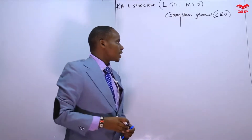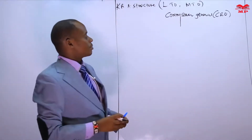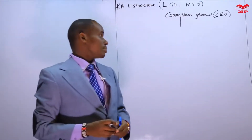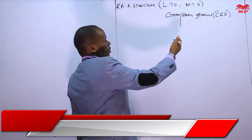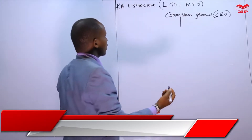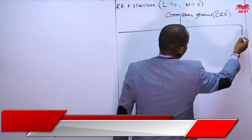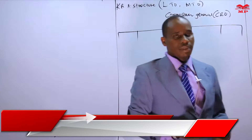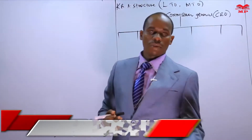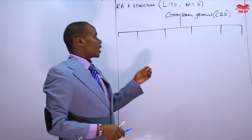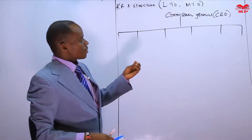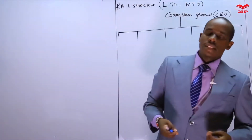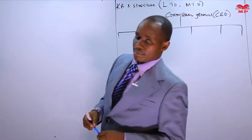We also find that we have board members, but the board members just receive reports from the full-time managers. Then after the Commissioner General, we have various departments at KRA, and these departments are headed by commissioners. The commissioners are located in their respective departments, depending on the service offered by that particular department.